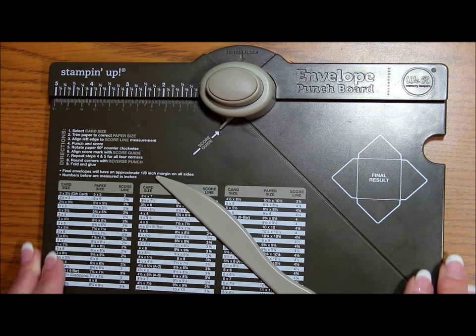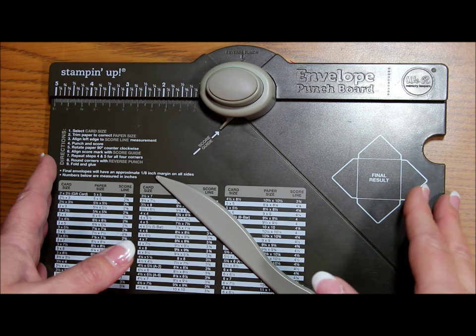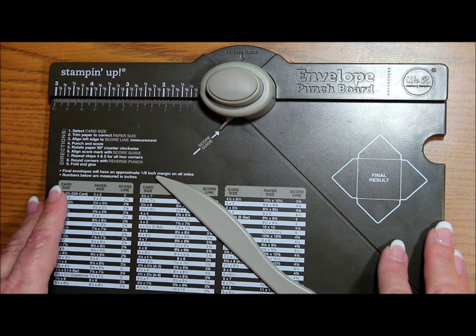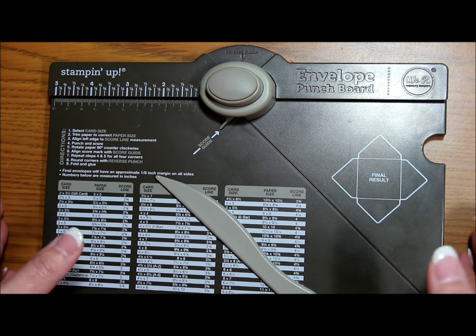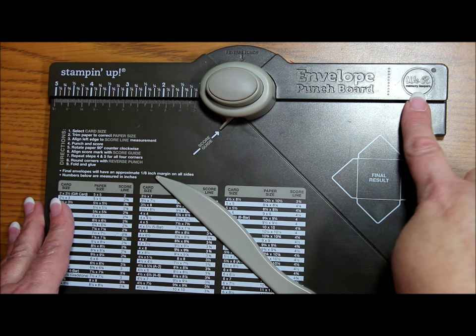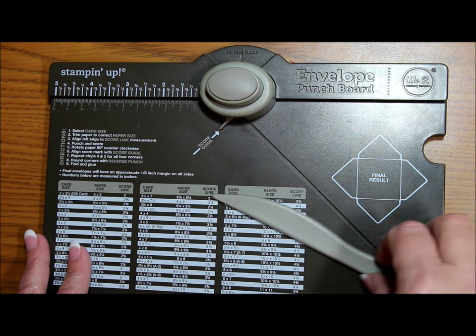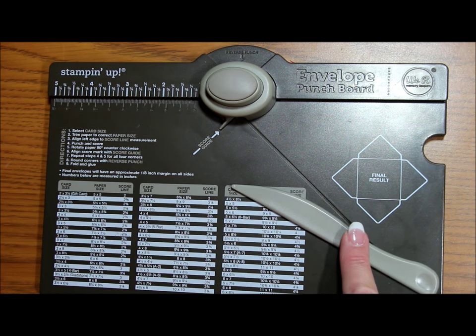To create today's project you'll need the following items. You'll need an envelope punch board. I'm going to be using the Stampin' Up punch board, but the We Are Memory Keepers punch board is exactly the same product and in fact they're both made by We Are Memory Keepers so it doesn't matter which one of the envelope punch boards you have and it comes with a scoring tool.